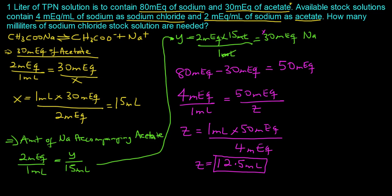And so knowing this 30 mEq is what's important, and then you can subtract that from the total to find the difference, and then you use the concentration of the sodium chloride to basically solve for the rest.